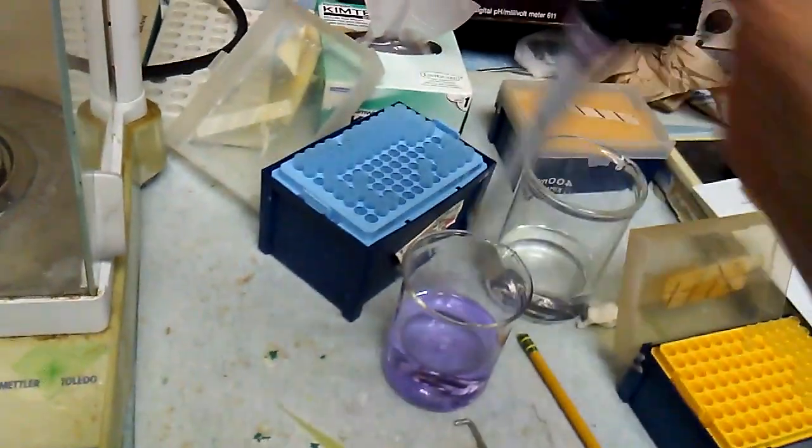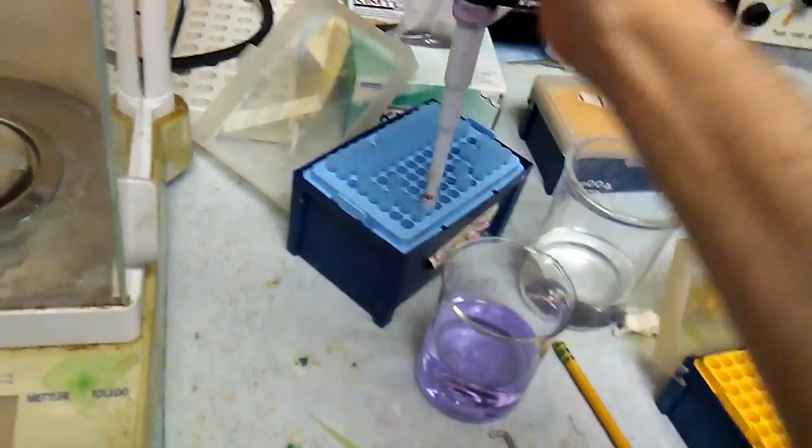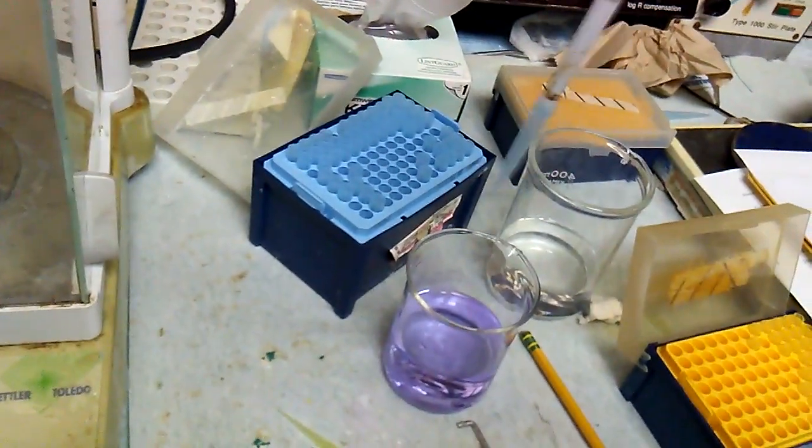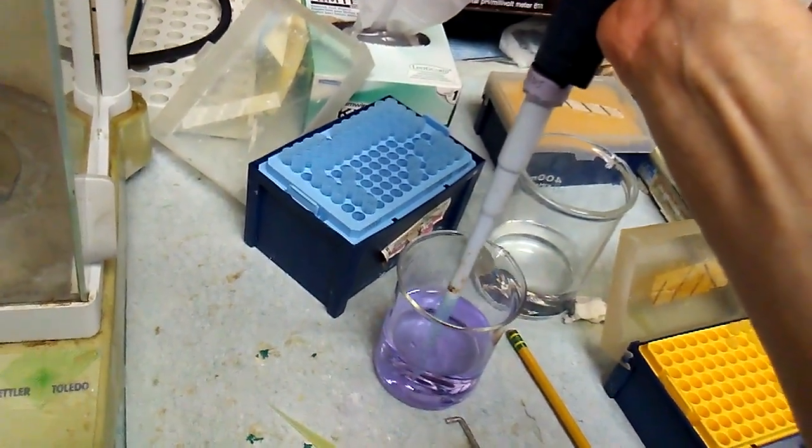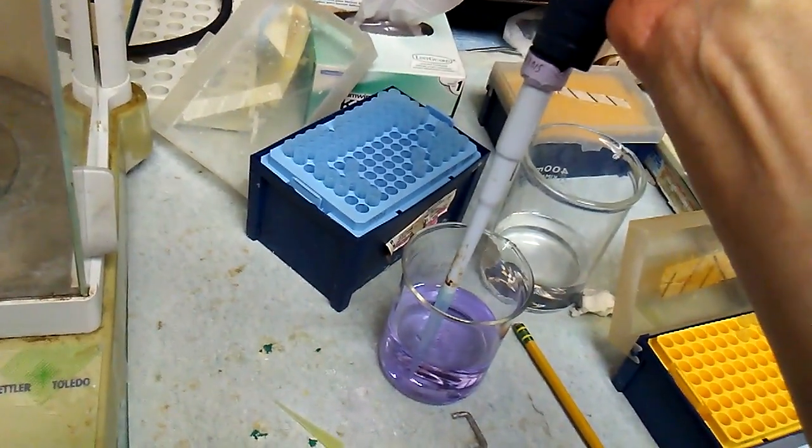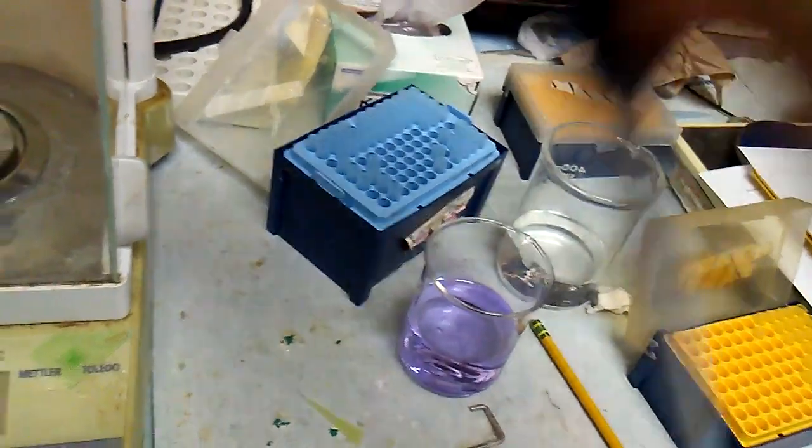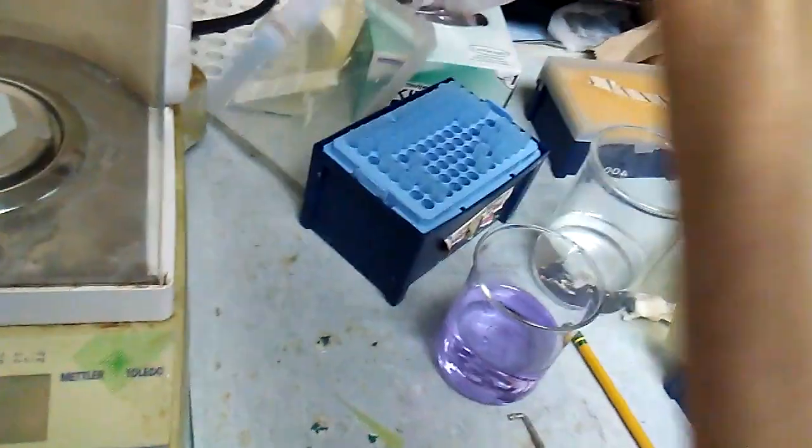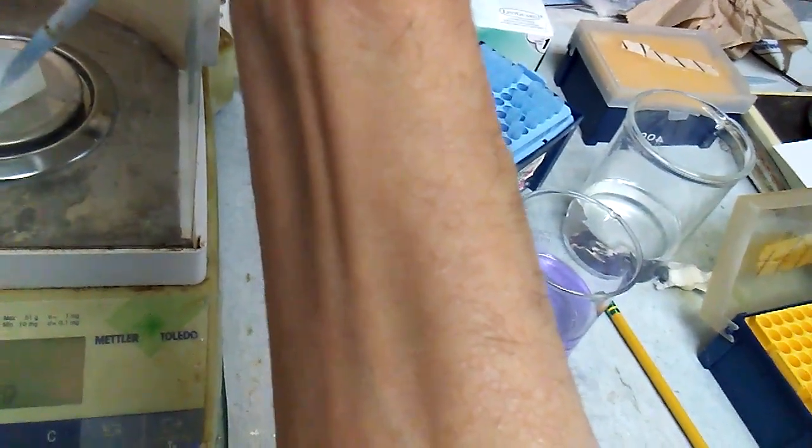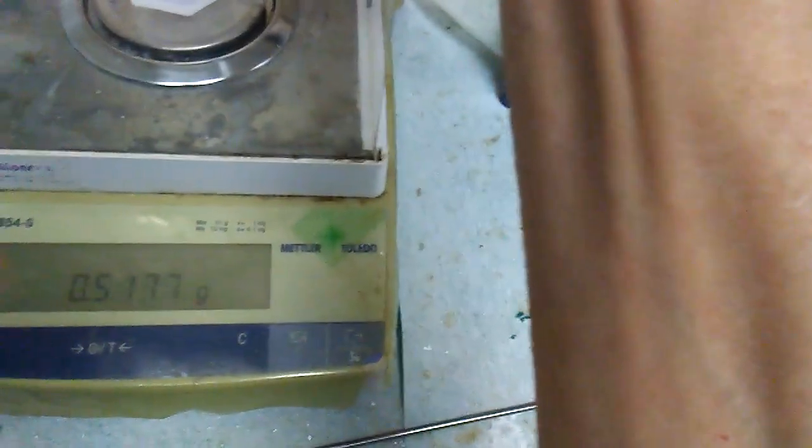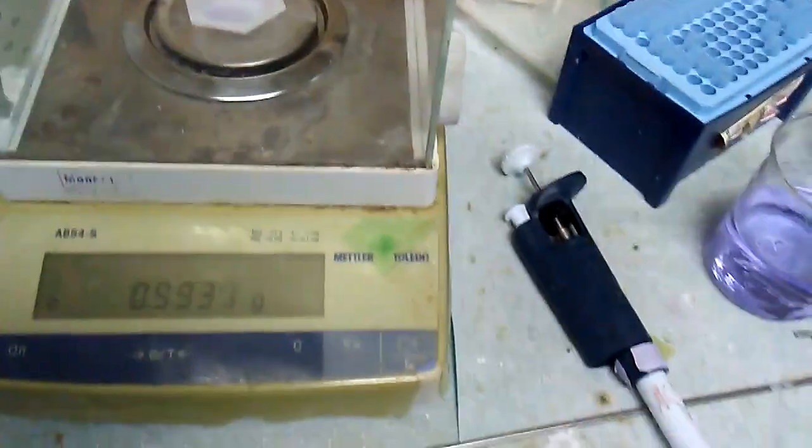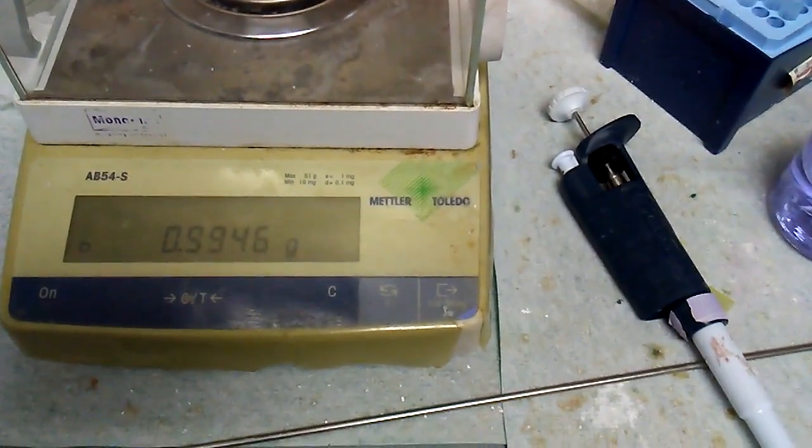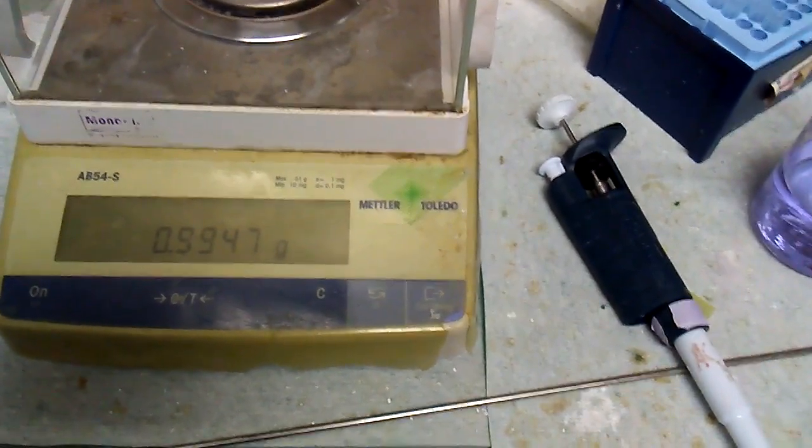Again let's see how we did. Pipette one milliliter. So that's about 995, not too bad.